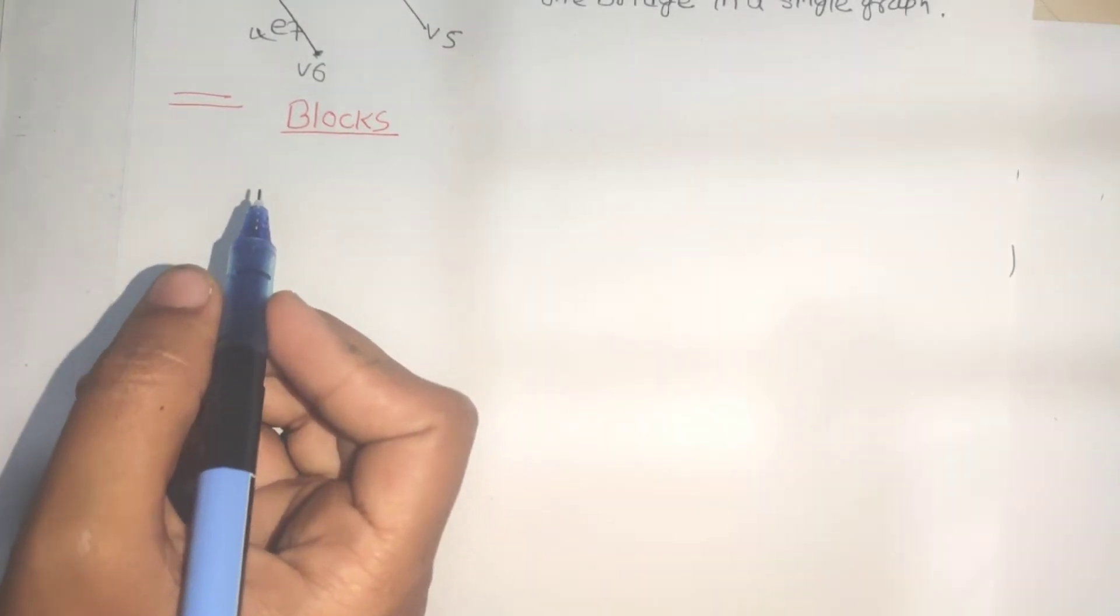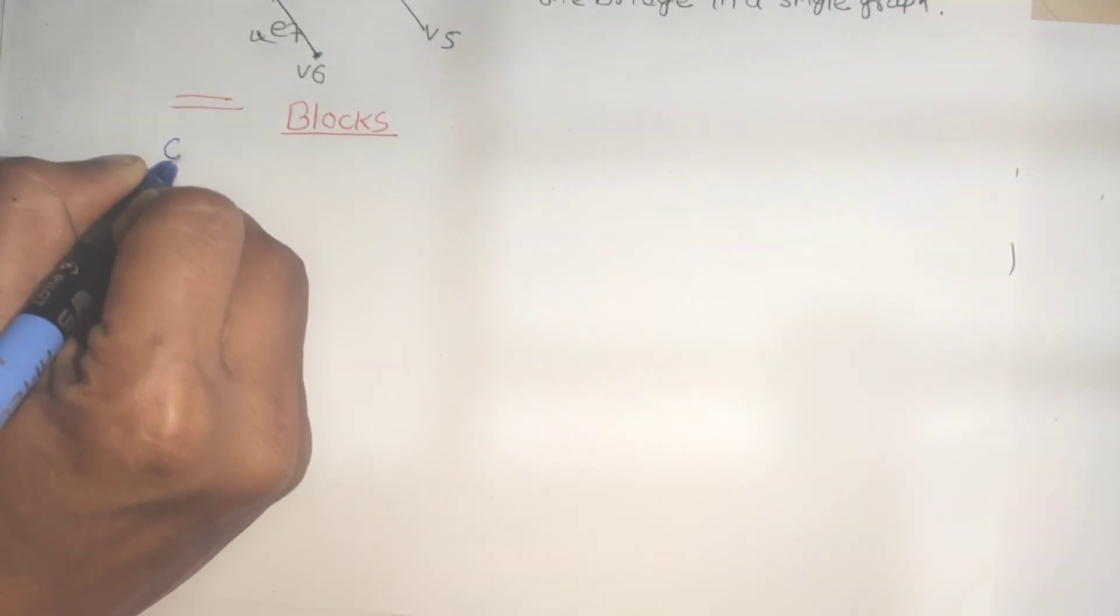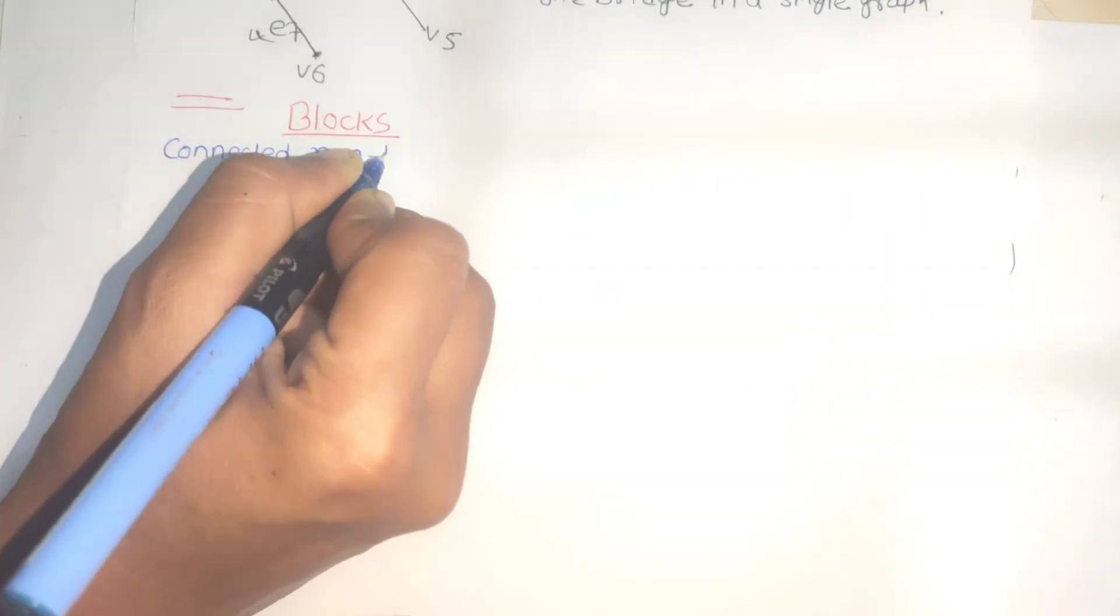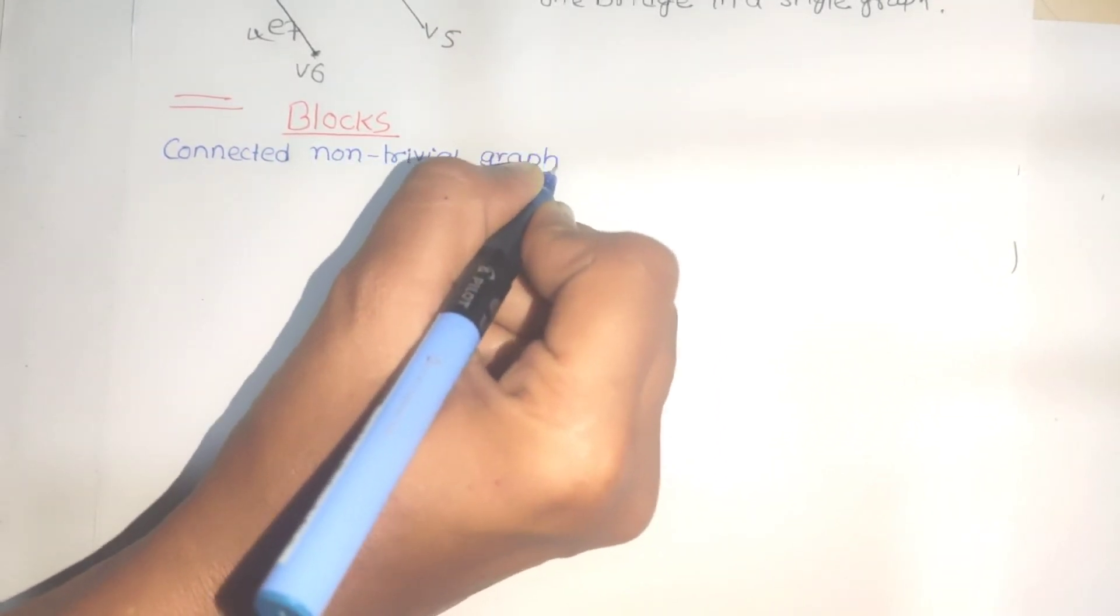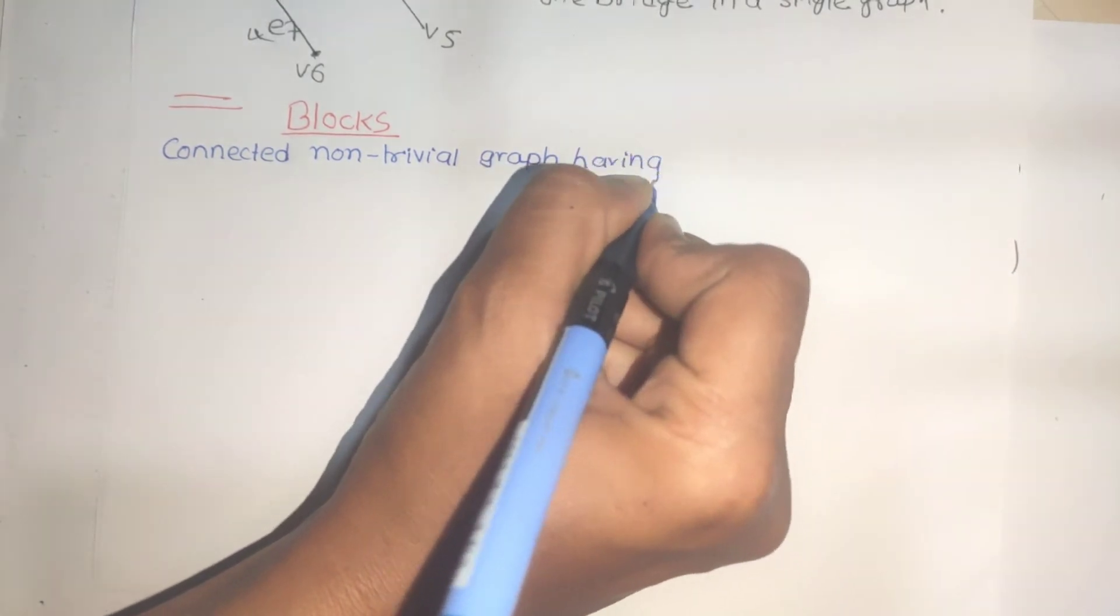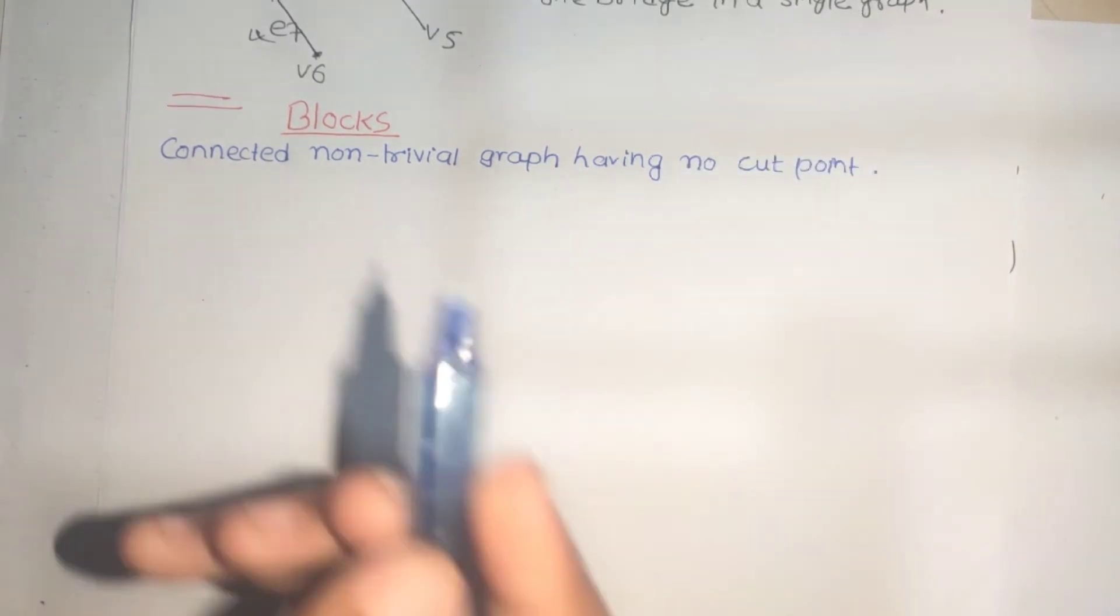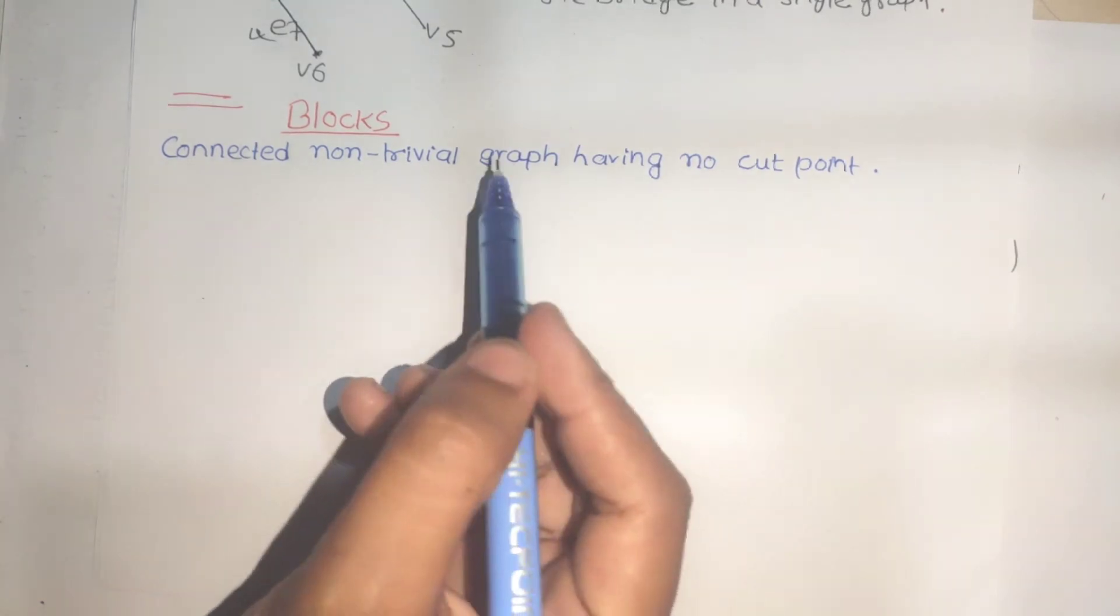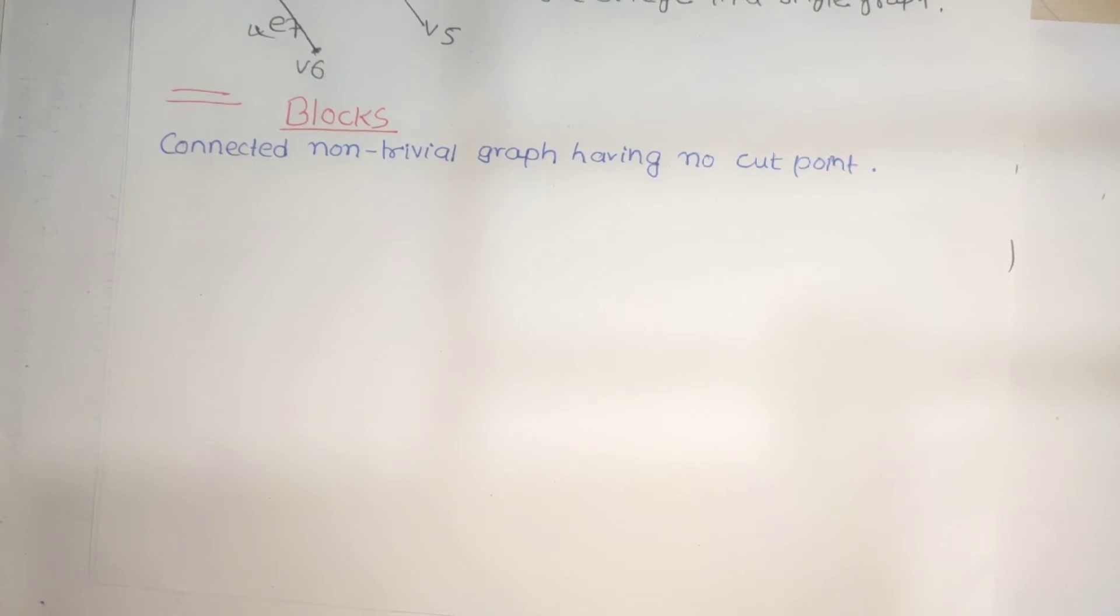First, I'm going to talk about the definition and then we will see examples of blocks. A block is a connected non-trivial graph having no cut point. Non-trivial graph means the graph has single vertices without any edges - single vertices only.